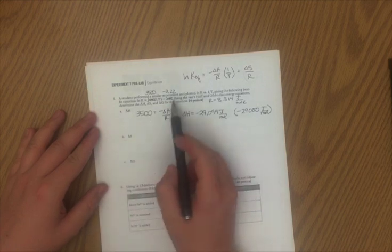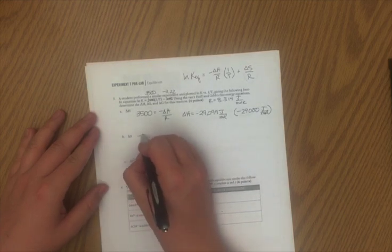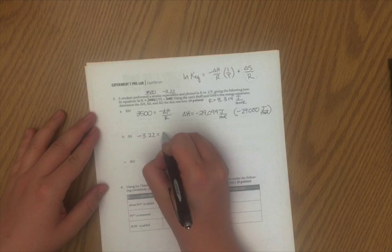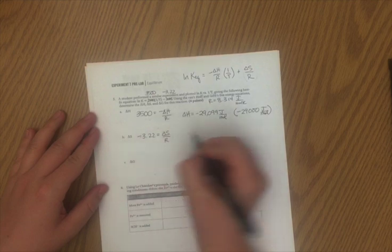For ΔS, I take my Y intercept, in this case negative 3.22, that's going to equal ΔS over R. Again, I use the same value of R, 8.314.